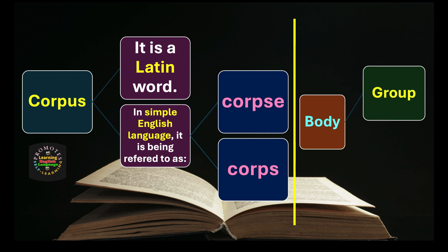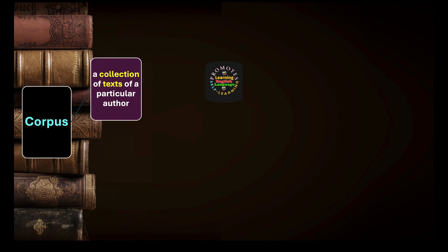What is body? Body as a group of something, body as a collection of something — not human body. We continue our discussion about corpus. Corpus refers to body, and body refers to group or collection.